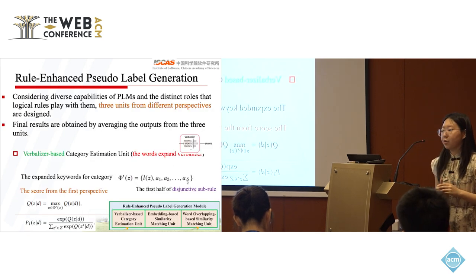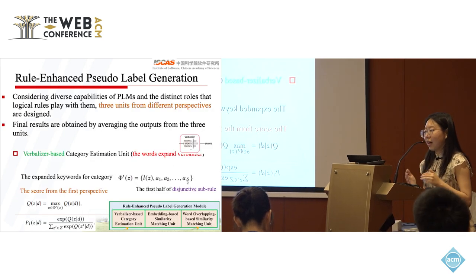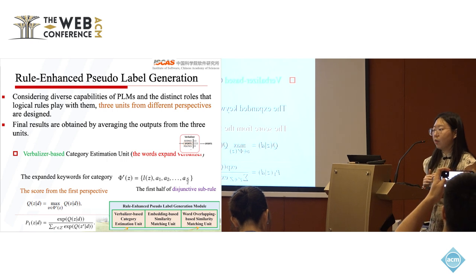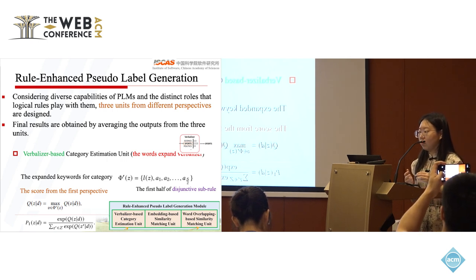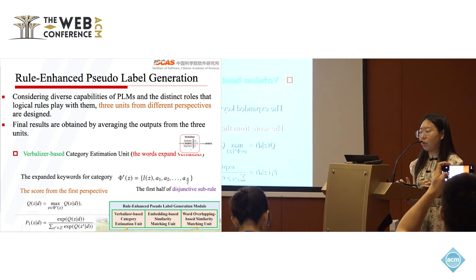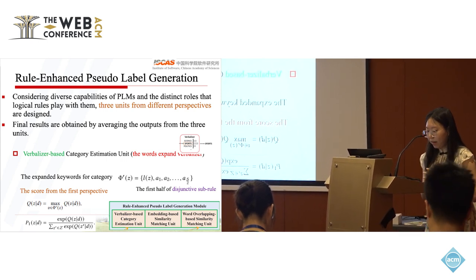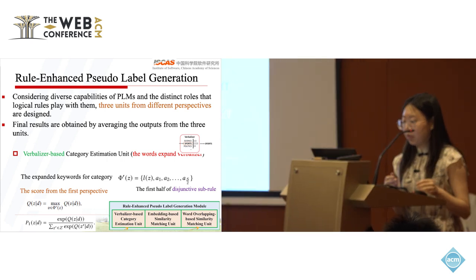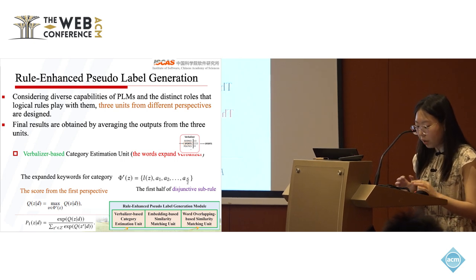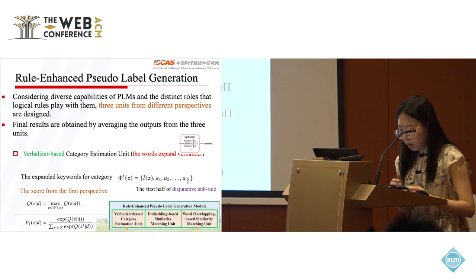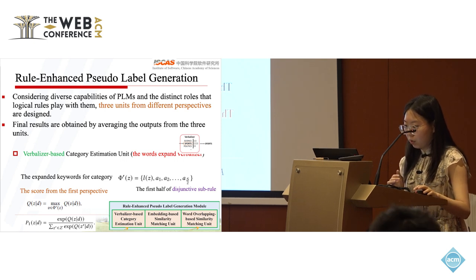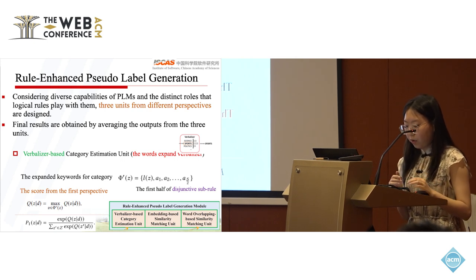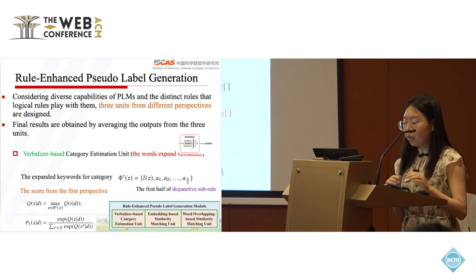In the rule-enhanced pseudo-label generation module, considering diverse capabilities of the PLM and distinct logical rules, we design three units from different perspectives, and finally, the final results are obtained by averaging the output from the three units. On the one hand, for the word level, in the verbalizer-based category estimation unit, we directly use the words in the first half of the disjunctive sub-rule with higher support to expand the verbalizer in view of the strictness of the verbalizer.